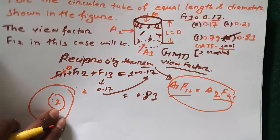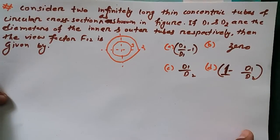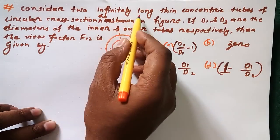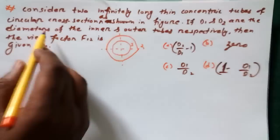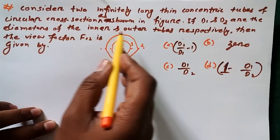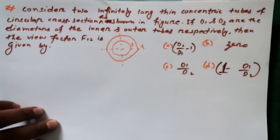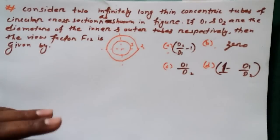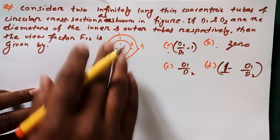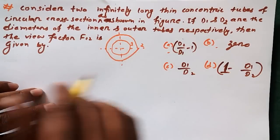Here is the next question. Consider two infinitely long thin concentric tubes of circular cross-section as shown in the figure. If D1 and D2 are the diameters of the inner and outer tubes respectively, then the view factor F22 is given by — and the options are shown. This is also a GATE question.